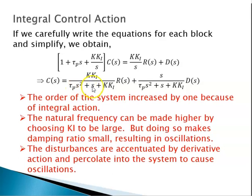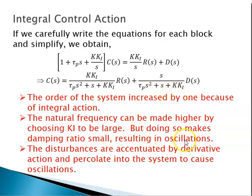The standard form is: (something)*s² + 2*xi*omega_n*s + omega_n² . You can see that omega_n can be increased by increasing K_i, but doing so will make the damping very small, resulting in oscillations. Also, disturbances are accentuated — even a small disturbance is amplified because when you differentiate it you are looking at slopes, which could be very high. The effect of disturbance is high, and disturbances may percolate deeply into the system to cause oscillations.